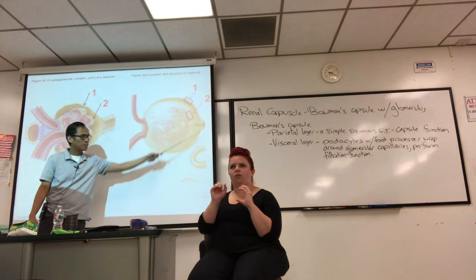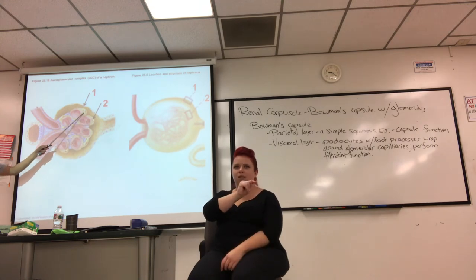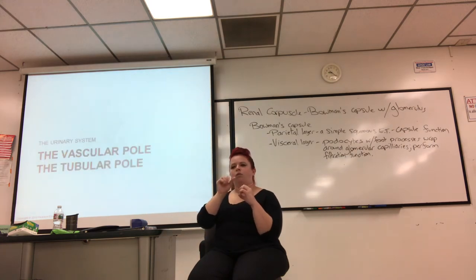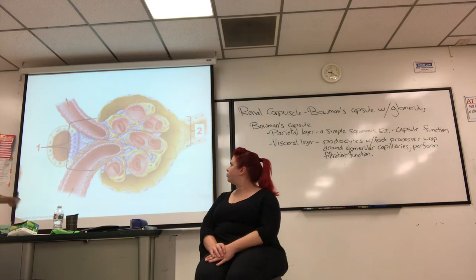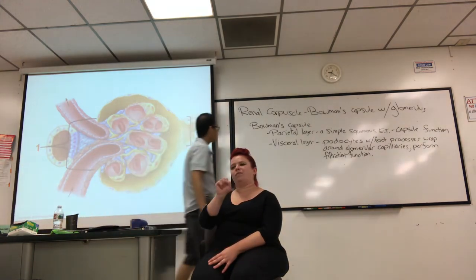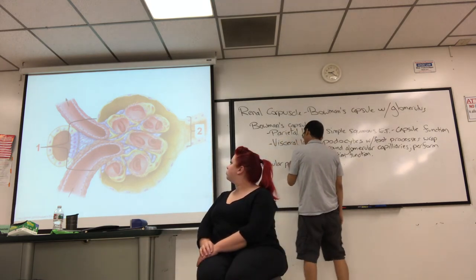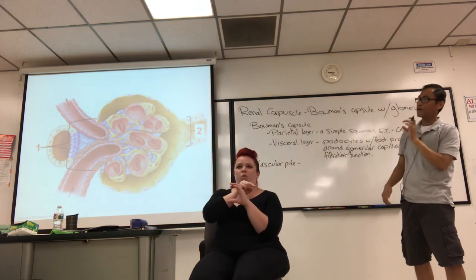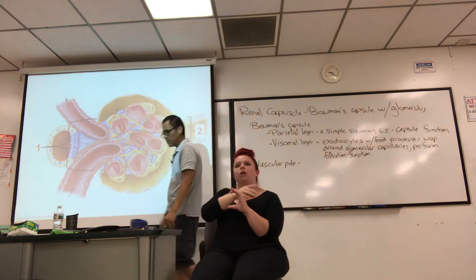Layer two is pointing to a podocyte cell wrapping around the glomerular capillaries. I also want you to know the vascular pole and the tubular pole. The vascular pole is the side of the renal corpuscle where you have the afferent and efferent arterioles, and you also have a portion of the DCT passing by.